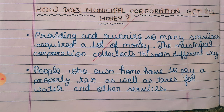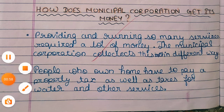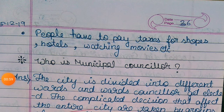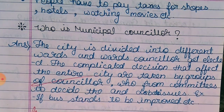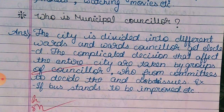People who own homes have to pay property tax as well as tax for water and other services. People also have to pay taxes for shops, hotels, watching movies, and so on.